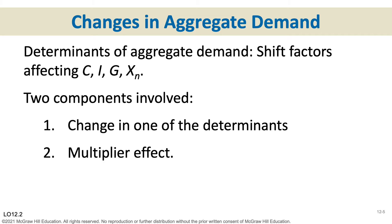Remember, aggregate expenditures = C + IG + G + XN. C was consumption — household spending. IG was investment. G was government. XN is exports minus imports. So if how much households, businesses, government, or the net export amount changes, that aggregate demand curve will shift right or left depending on whether we're increasing or decreasing spending.